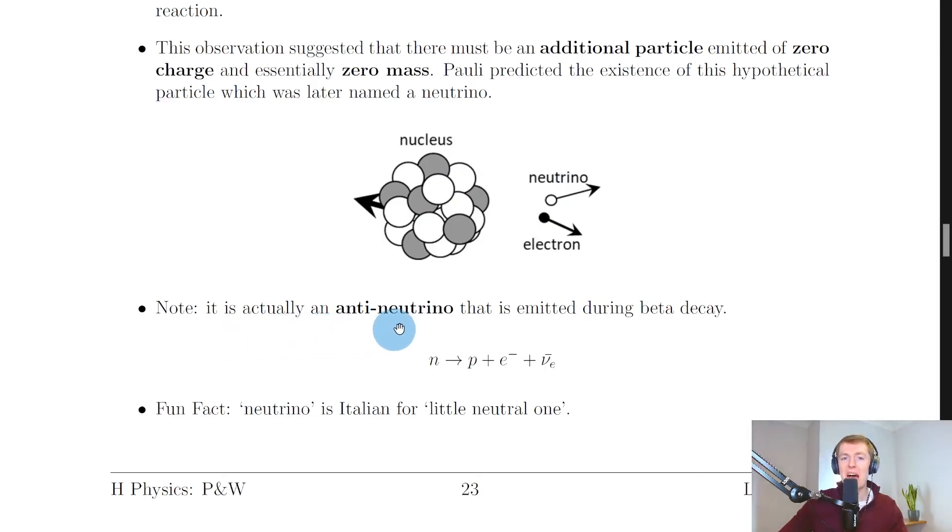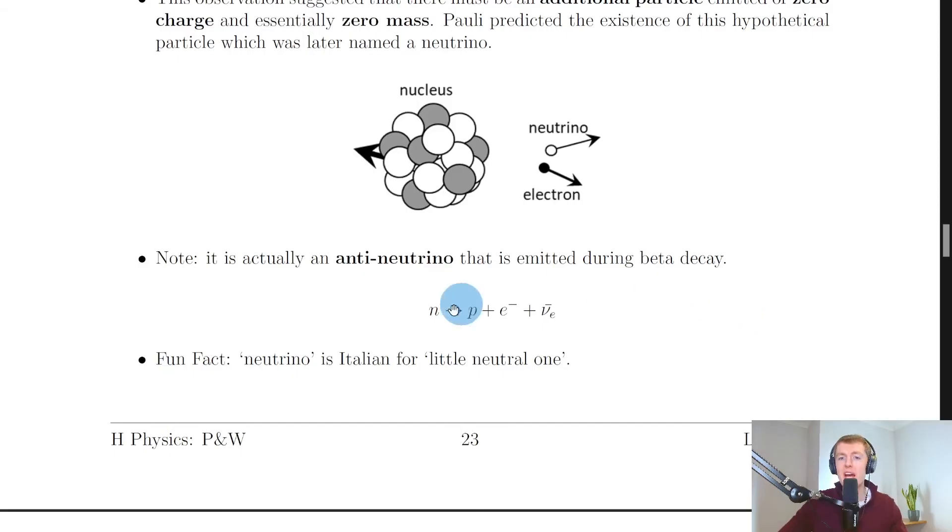Pauli suggested that not only was an electron emitted from the nucleus, but also a very small particle called the neutrino of zero charge and essentially zero mass. Note that it is actually an anti-neutrino that is emitted during beta decay.